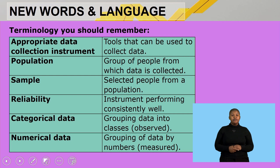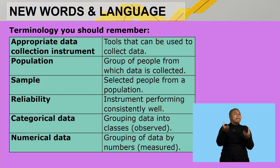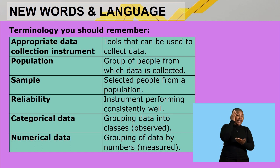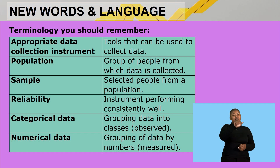Now for the terminology you should remember. First, an appropriate data collection instrument is a tool that can be used to collect data during research. Population refers to the group of people from which the data will be collected. Sample refers to selected people from a population — from a large group we take a small portion, which we call a sample.